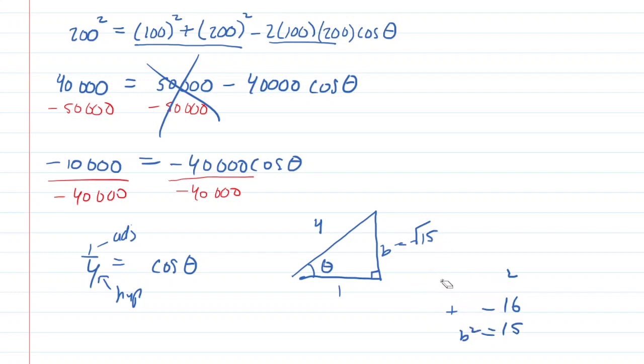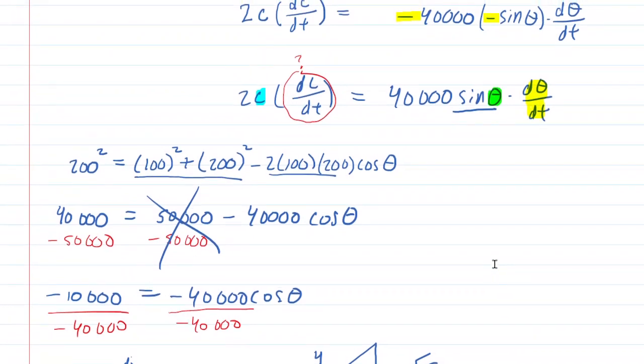So now go back and look at that triangle and you can easily figure out what the sine of theta is because sine is opposite over hypotenuse. So the opposite from theta is the square root of 15 and the hypotenuse is four. So there's our sine of theta. It's root 15 over four.